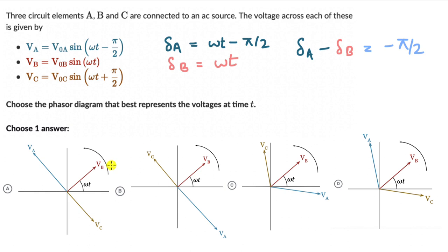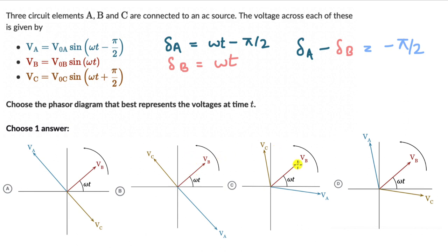On the phasor diagrams we see this curved arrow, which means the phasors are moving in an anticlockwise direction. So if the phase difference between these two is minus pi by 2, circuit element A is lagging behind circuit element B by pi by 2, which means A should be below B by pi by 2. We see this in options B and C.